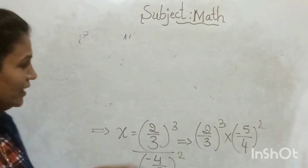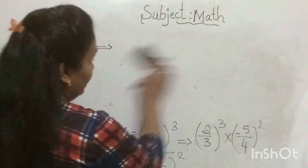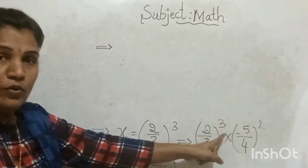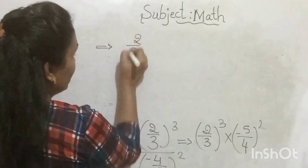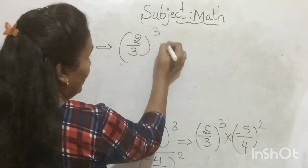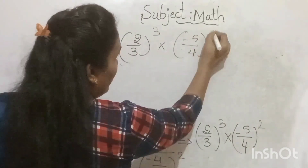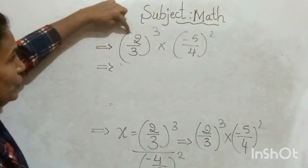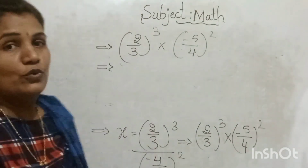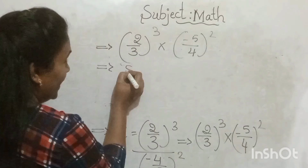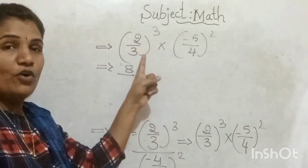This implies (2/3)³ × (-5/4)², which means 2³ divided by 3³. Now, 2³ means 2 × 2 × 2 = 8, and 3³ we will compute next.